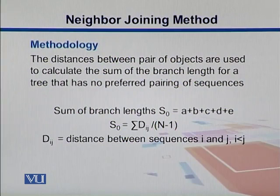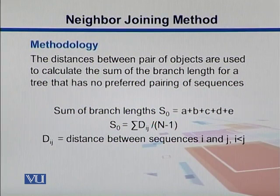That summation over all distances divided by N minus 1, the total number of sequences minus 1. If we take the summation of Dij and divide by N minus 1, that also equals S0.